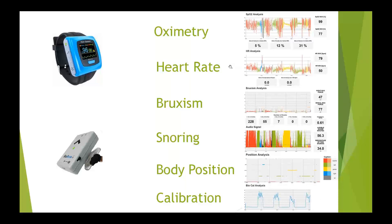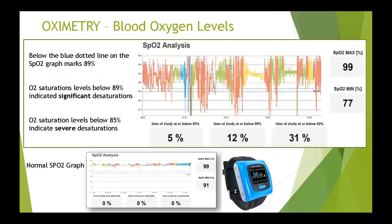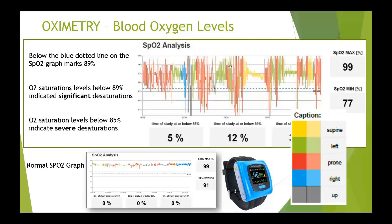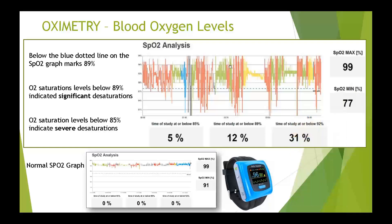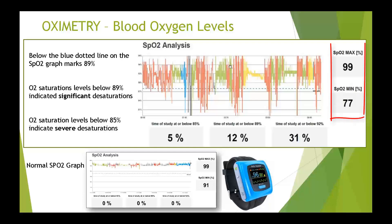The first graph is the SpO2 analysis — blood oxygen levels. The colors again indicate sleeping position. You'll also notice a dotted blue line drawn at 89%, meant to give you a sense of where the oxygen desaturations are. Around the graph, on the right side, you'll see a minimum and maximum SpO2 value — in this case 99% max and 77% minimum. Underneath the graph we have three bins.